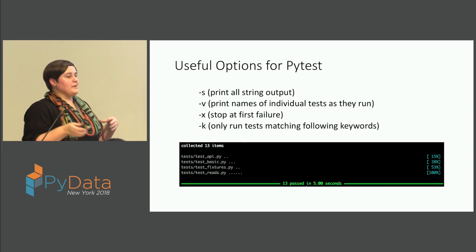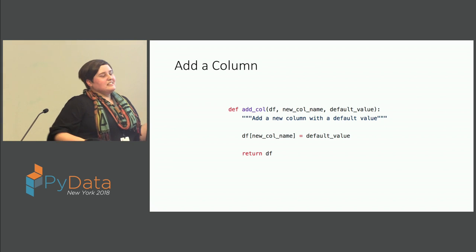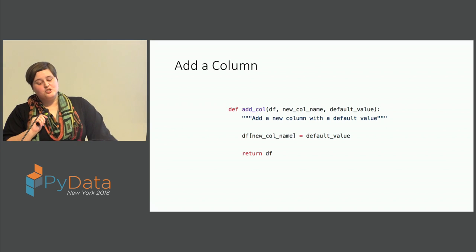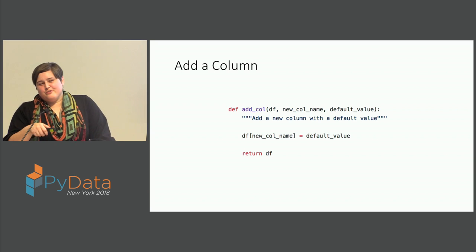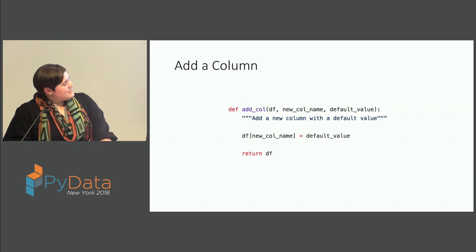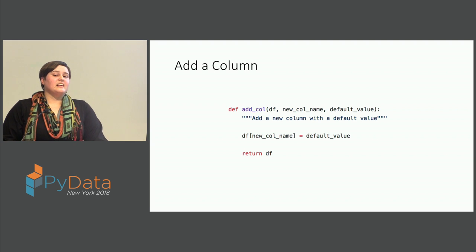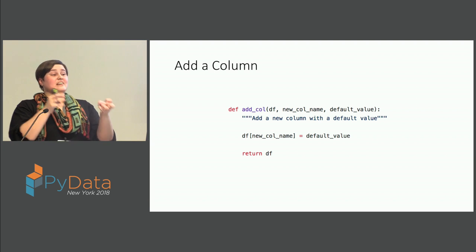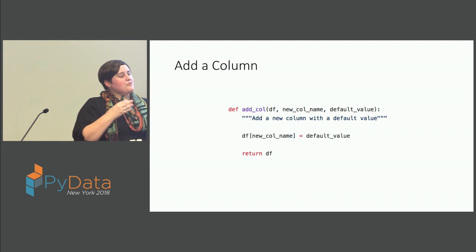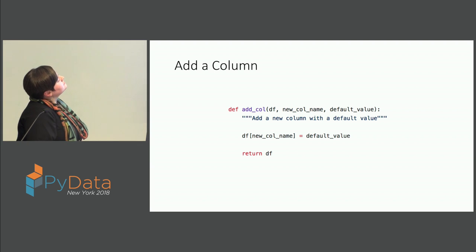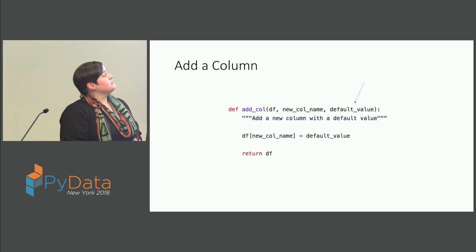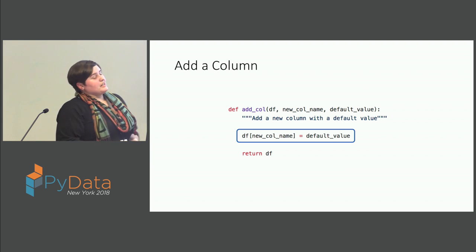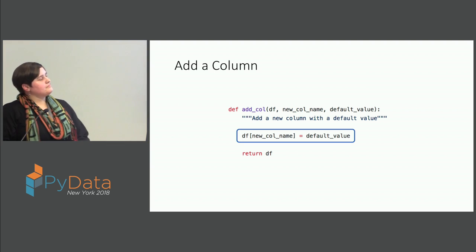Let's write some code. We have this super useful function that adds a column to a pandas DataFrame. All of my functions I'm testing in this talk are not functions I would actually advocate you write because they are extraordinarily simple, but they kind of show patterns that you see in data science work. So we have this add_column function — we have a DataFrame, a column name, a default value for that column name — and then we make a new column and assign it that value.